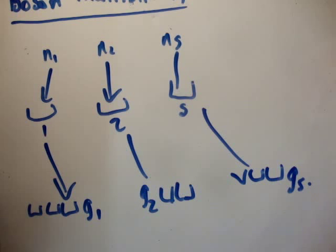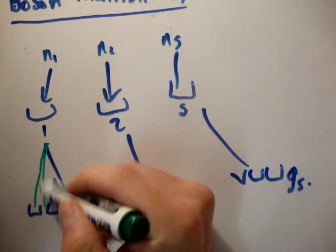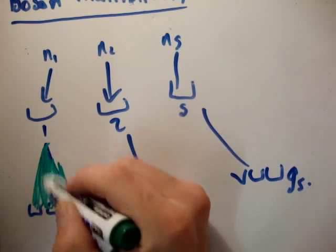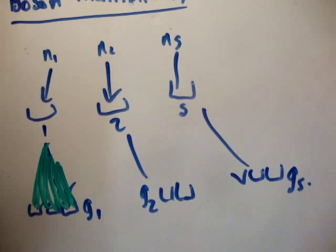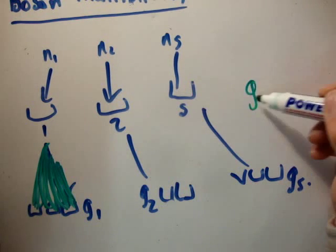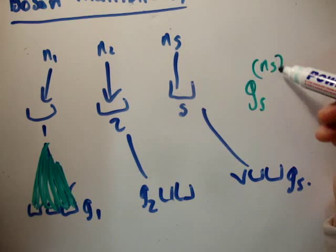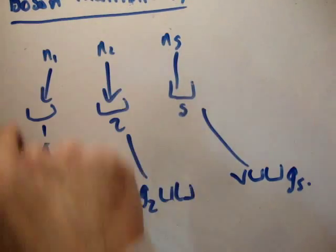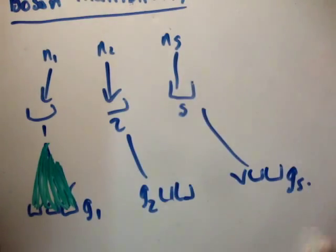But the problem here is that we can put any number of these N sub S particles into any one of these. Okay, now, with the classical particles, we just said it's G sub S to the N sub S. But there's actually a better way of looking at this.